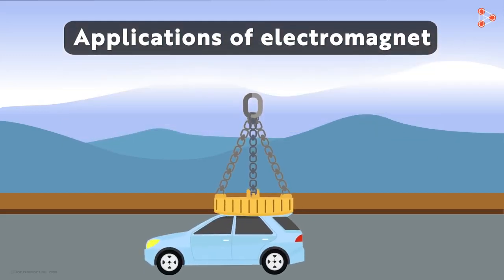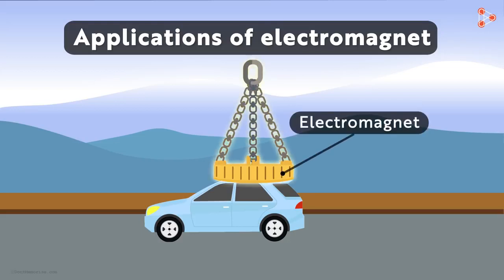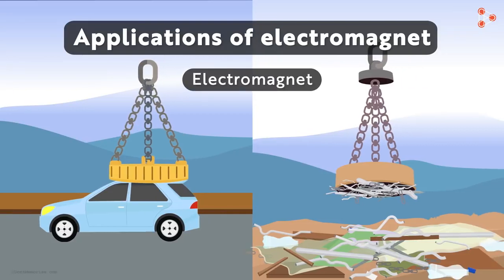You must have seen large machines used to lift up cars. They have an electromagnet in them. This electromagnet is so strong that it can lift the whole weight of the car. Electromagnets are also used to separate metal objects from a pile of junk.